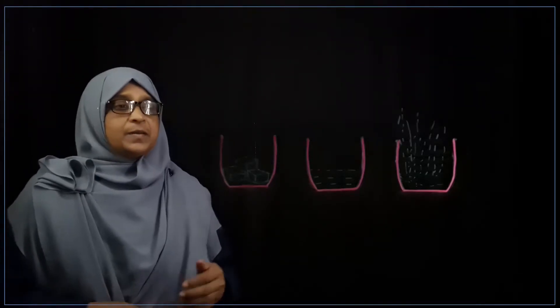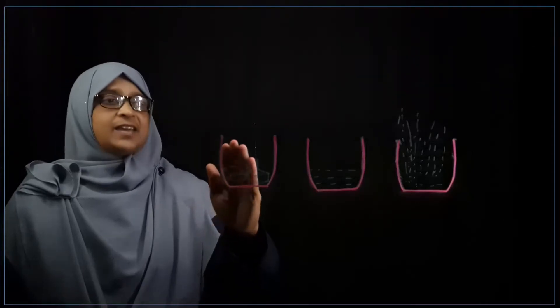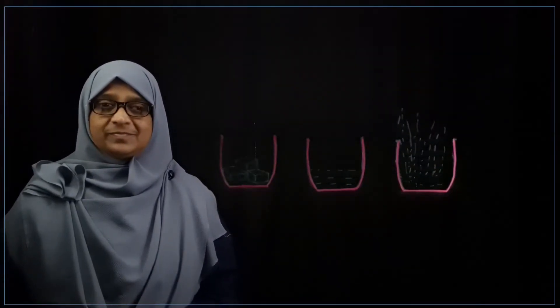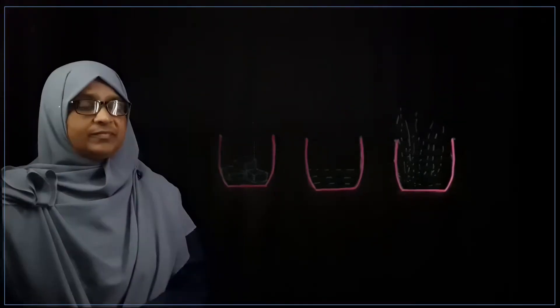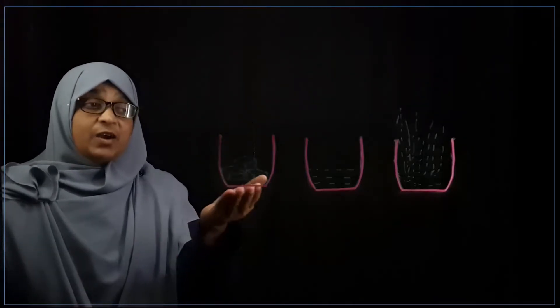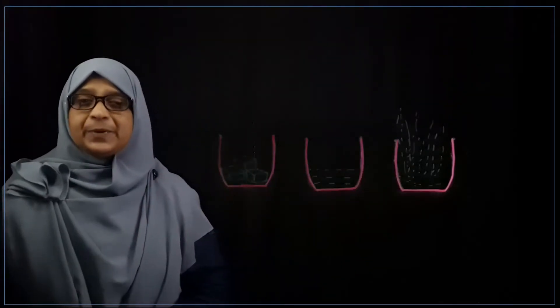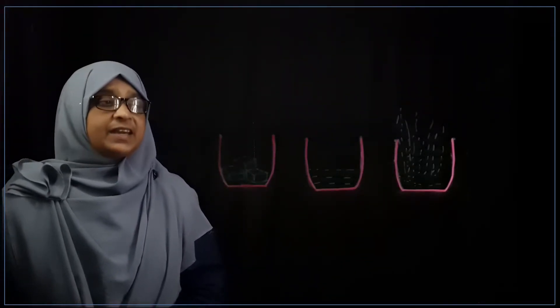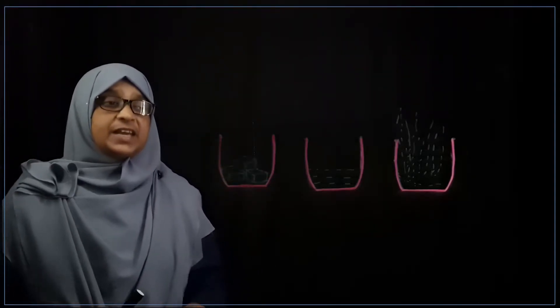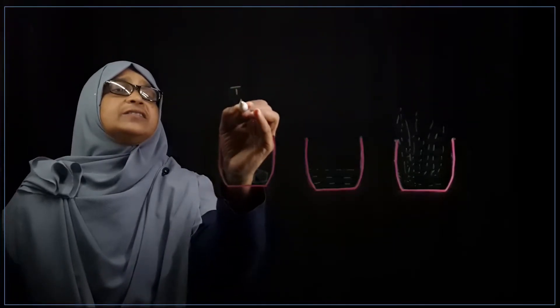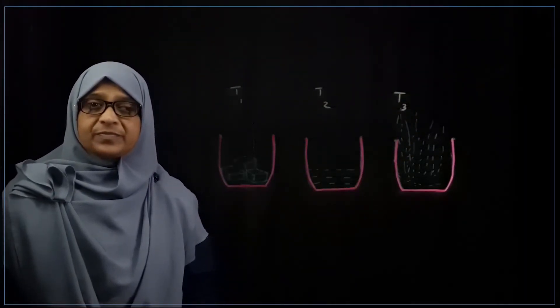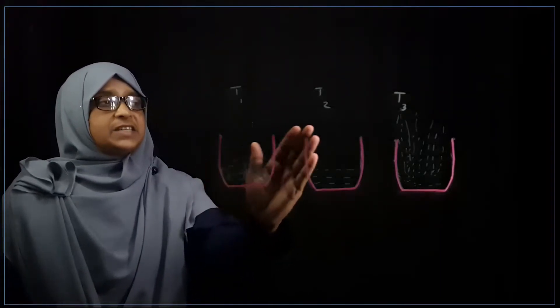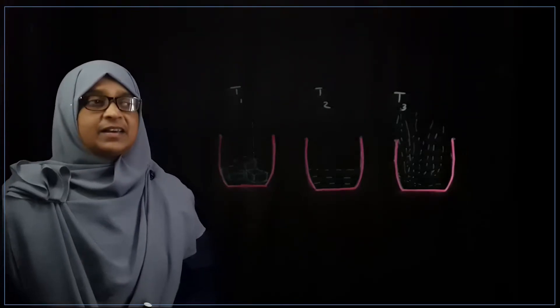Now by touching, we can see this is cool. This is hot. This is the way we feel the temperature. We have ice, liquid water, water vapour. We can say the temperature of the ice is T1, this is T2, and this is T3. By touching, we can give a rough idea like this.